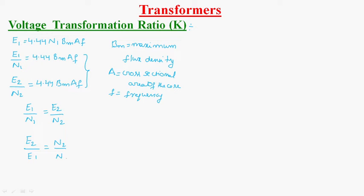E2 by E1 is equal to N2 by N1, which is equal to K. So what is this K? K is nothing but the voltage transformation ratio.